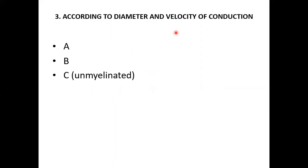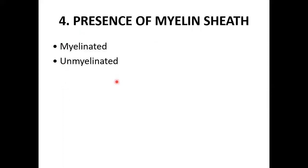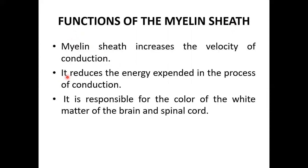According to diameter and velocity of conduction, nerve fibers are divided into A, B, and C types, with C being unmyelinated. The myelin sheath increases the velocity of conduction, reduces the energy expended in conduction, and is responsible for the white color of the white matter of the brain and spinal cord.